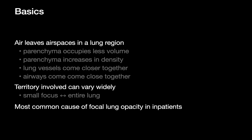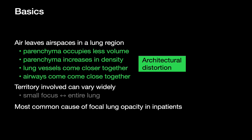First, some first principles. What is atelectasis? It's a situation where air has left a portion of the airspace in the lung — that can be a small or large region. When that happens, the remaining parenchyma, no longer filled with air, occupies less volume and appears more dense. Whatever structures were in that lung — blood vessels or airways — are now crammed into a smaller volume, and the architecture becomes distorted as things shrink.